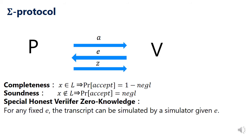Now I move to the technical part. We proposed two constructions, but in this talk I focus on the first. Our first construction is almost the same as the Goldreich-Kahan construction, which is based on the sigma protocol. A sigma protocol is a three-round interactive protocol satisfying completeness, soundness, and special honest-verifier zero-knowledge. Special honest-verifier zero-knowledge means that for any fixed challenge E, the transcript can be simulated by a simulator given E. This differs from general zero-knowledge because a malicious verifier can choose E depending on the first message A, so we cannot fix E in advance.